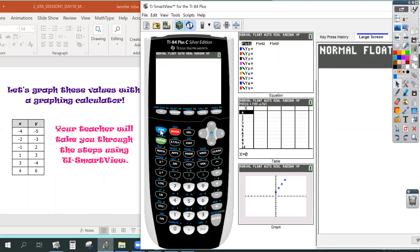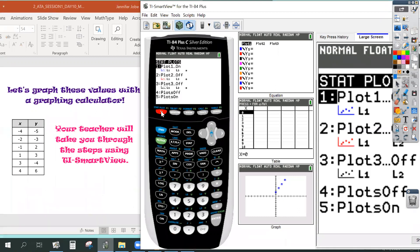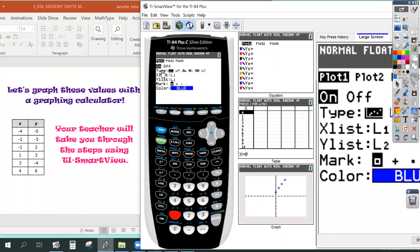So go ahead and hit second, Y equals, and where it says number one, press one or click enter, whichever works better for you. And make sure this cursor where it's blinking is on top of the on button and hit enter. Because we want to make sure that the first stat plot is turned on so it shows up on my graph.